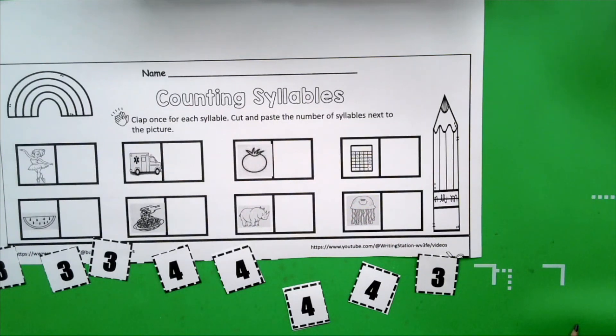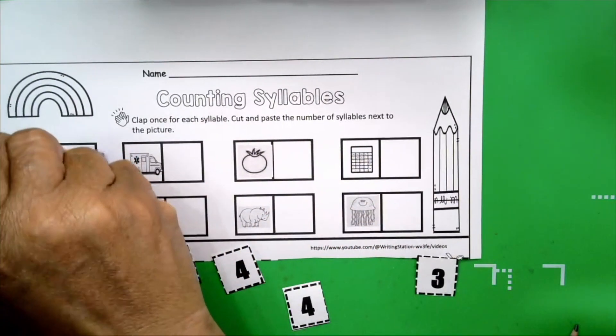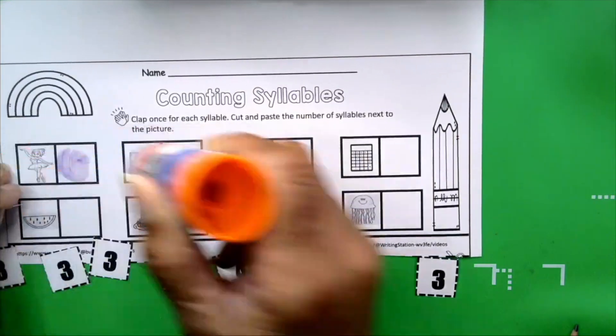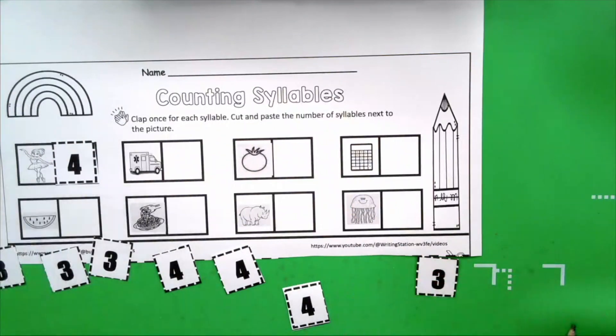How many claps? Four. You're right. I heard someone in the back say four. Four claps and how many syllables? Four syllables. So you're going to get your glue stick. We need number four and we're going to do our glue swirl. We're going to paste the number four next to the ballerina. That means that the word ballerina has four syllables.